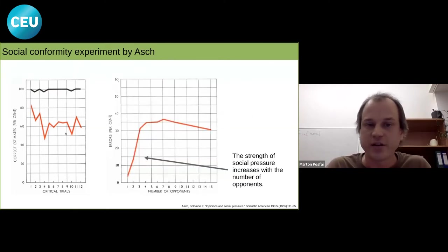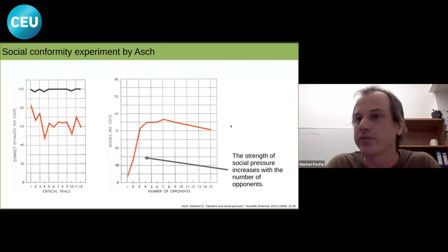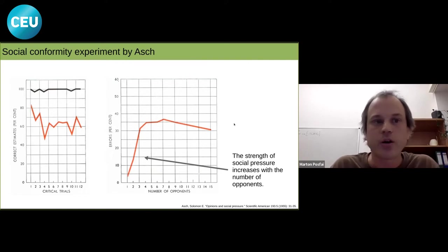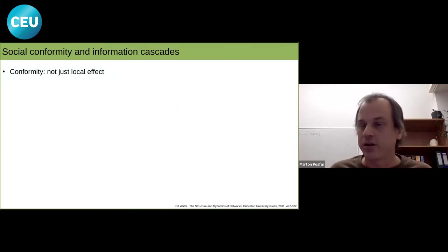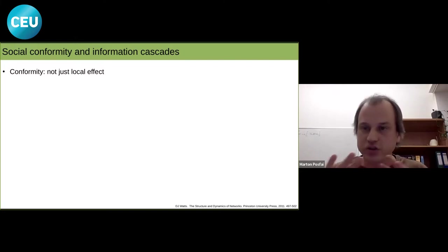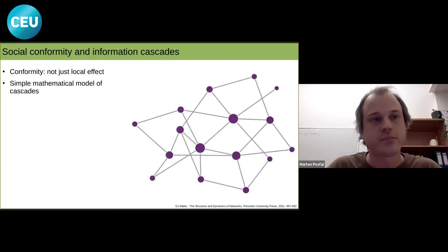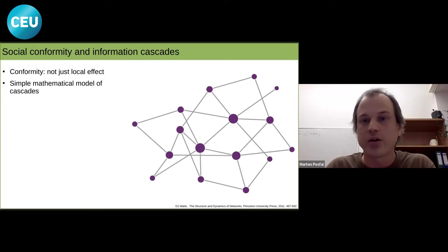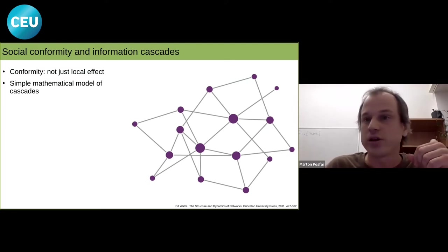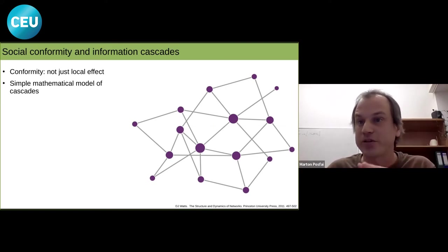They didn't want to stand out. A larger group initially made it more likely to pick the wrong answer, but this leveled off — peer pressure reached a maximum regardless of further group size. Conformity is not just a local effect. It's not just changing your personal opinion based on friends, but it can cascade and change collective decisions as well. To show how this works, I'll present a simple mathematical model that captures how conformity and opinions can spread on a social network — developed by someone who was originally a physicist but became a professor in social sciences, highlighting the interdisciplinary nature of this problem.